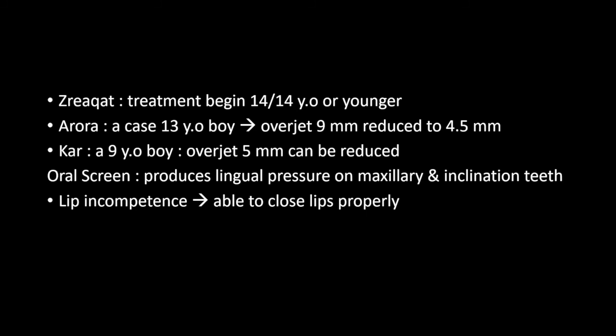Proper dental care carried out in the mixed dental period was performed in cases of class 3 crossbite and class 2 cases where the cases were interfering with appearance. Aurora reported a case of a 13-year-old boy with a class 2 Mollard occlusion relationship, class 1 canine relationship, and overjet of 9mm — after using the oral screen, the overjet reduced to 4.5mm. Carbo used the oral screen on a 9-year-old boy with an overjet of 5mm, and after using the appliance, the overjet was reduced.